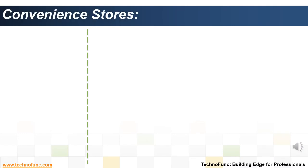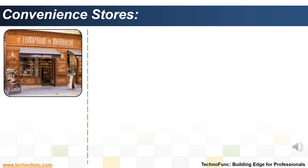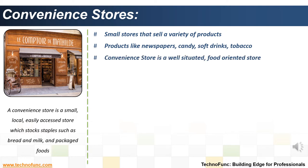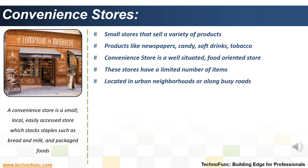Convenience stores are small stores that sell a variety of products such as newspapers, magazines, candy, soft drinks, tobacco products, and lottery tickets. A convenience store is generally a well-situated, food-oriented store with long operating hours and a limited number of items. These stores are usually located in urban neighborhoods or along busy roads, and are often open longer hours than other types of retail establishments.